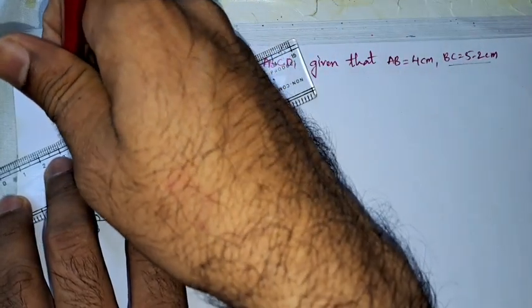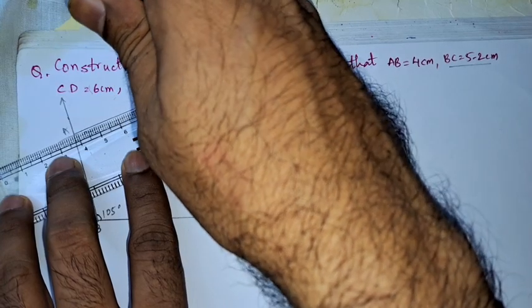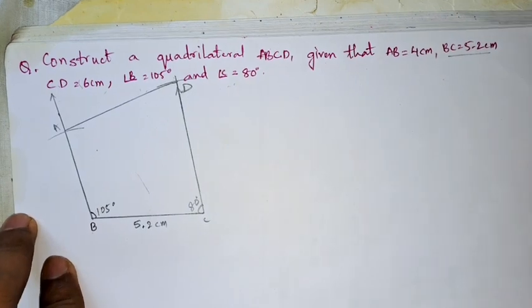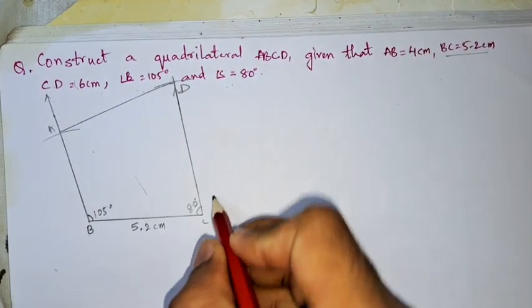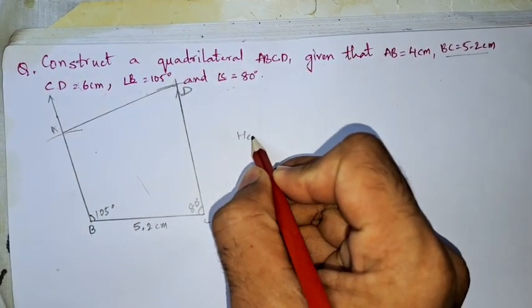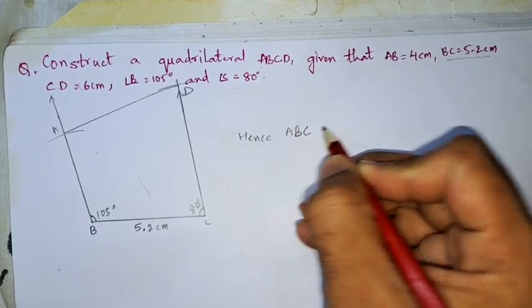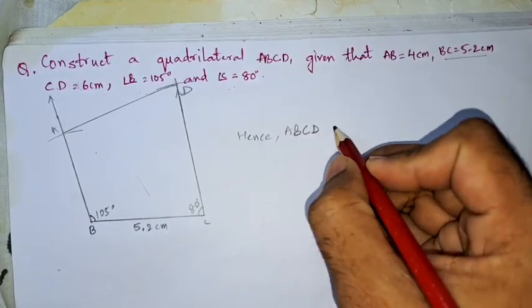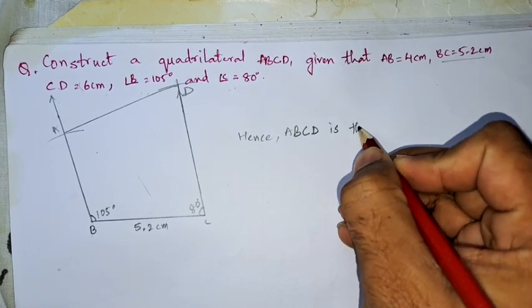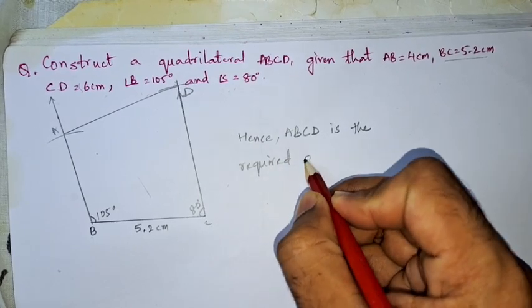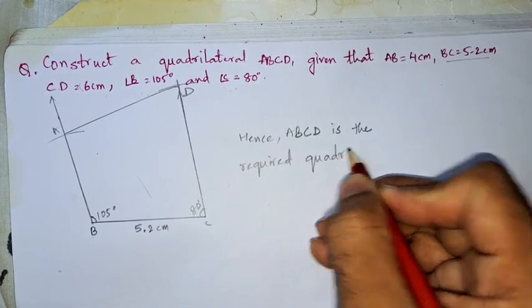Remember one more thing that you have to draw the rough diagram also. So this is our required quadrilateral. Let us write down hence ABCD is the required quadrilateral.